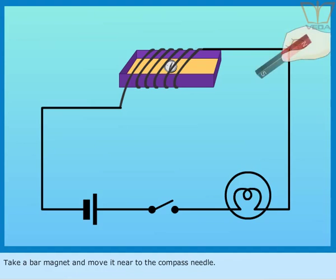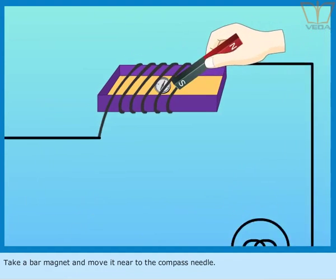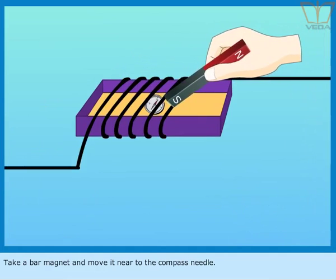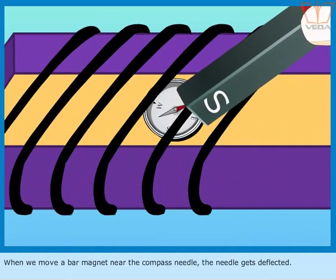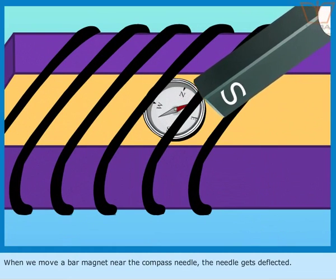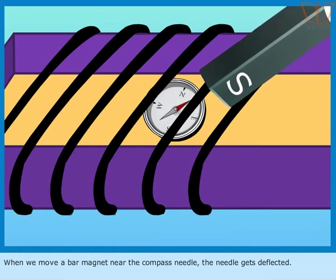Take a bar magnet and move it near to the compass needle. Observe the compass needle carefully. When we move a bar magnet near the compass needle, the needle gets deflected.